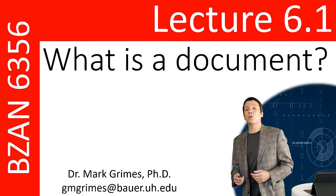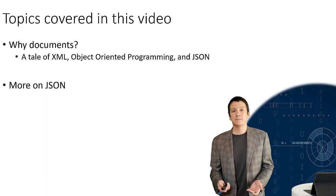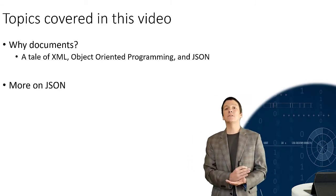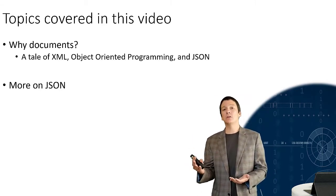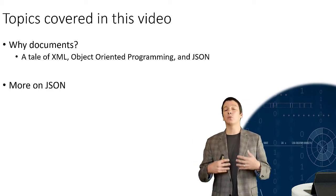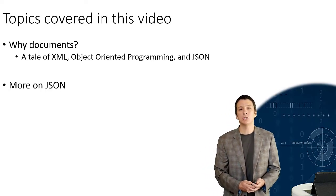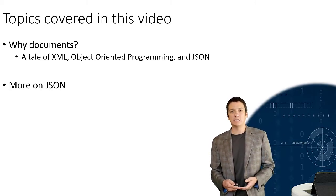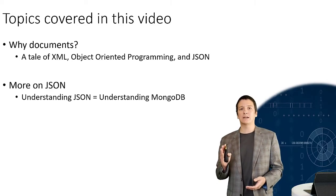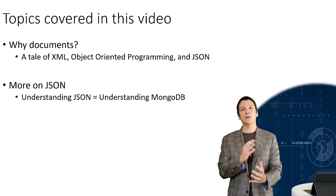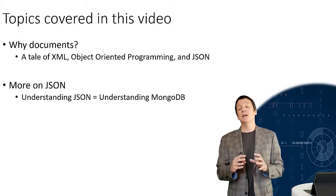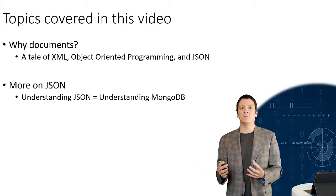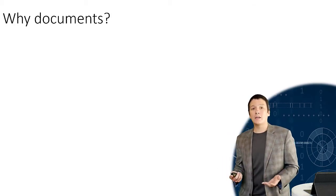Welcome to lecture 6.1 where we are going to be answering the question: what is a document? In this video we'll give some historical context around documents, starting with XML and the rise of object-oriented programming, and how we eventually moved into a different file format called JavaScript Object Notation, or JSON. Understanding JSON is critical to understanding how to interact with MongoDB.